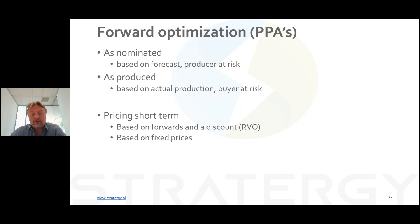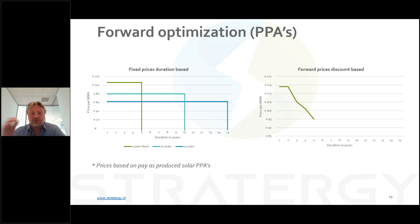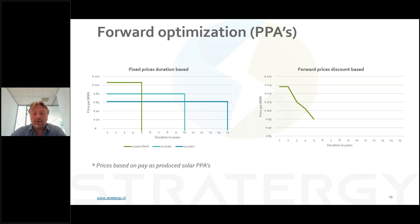The pricing of these Power Purchase Agreements is often based on forward prices as published on exchanges such as the ICE index, with a discount applied at settlement for corresponding years based on profile and imbalance correction that RVO applies annually for the SDE subsidy. Also commonly used are fixed prices for fixed periods — for example, a fixed price for 5, 10, or 15 years — where prices decrease as the period increases, offering advantages for both the producer and the offtaker.